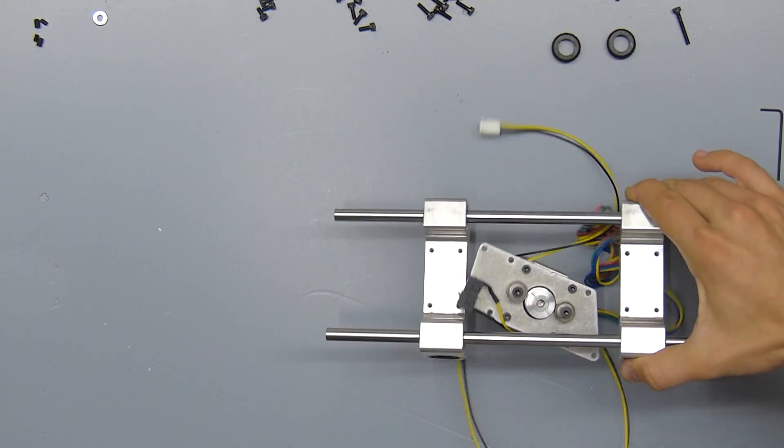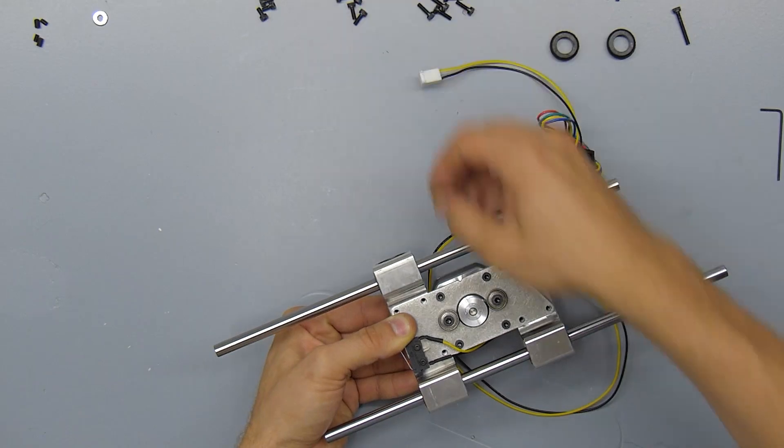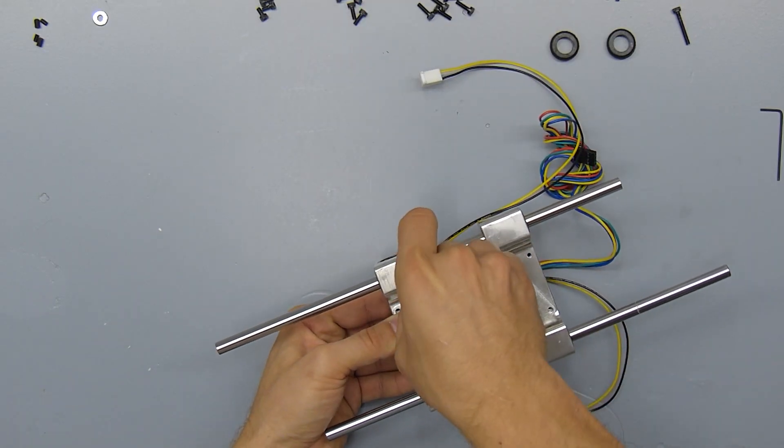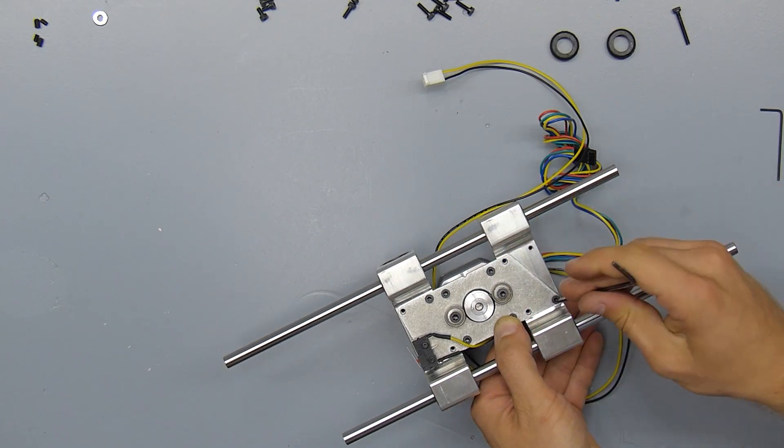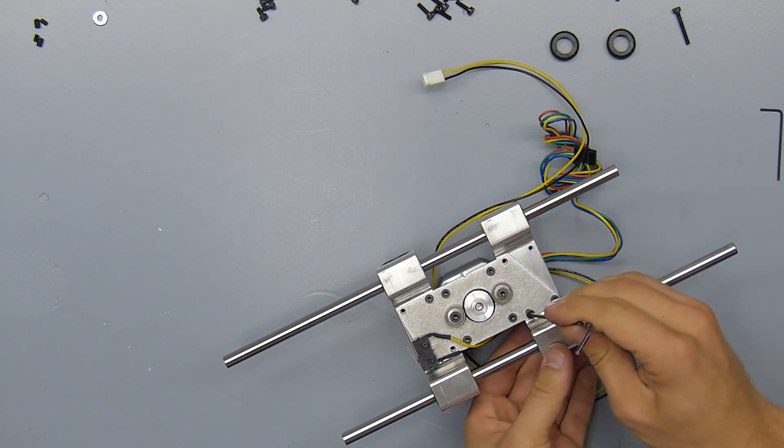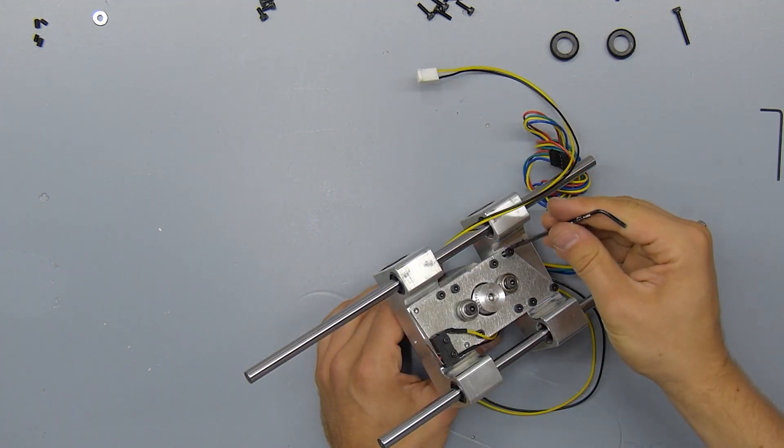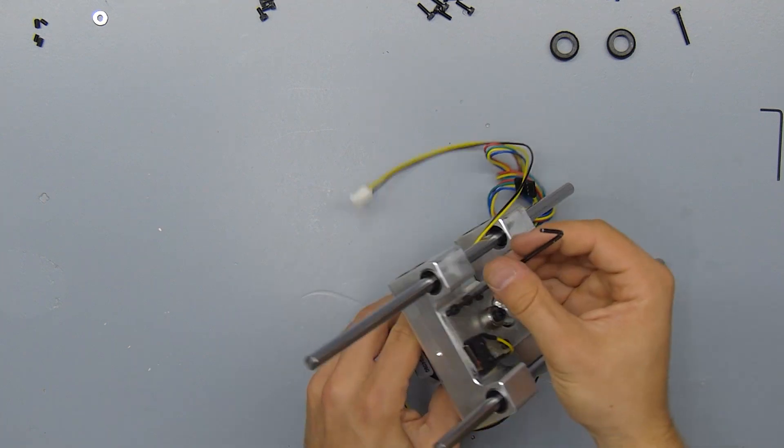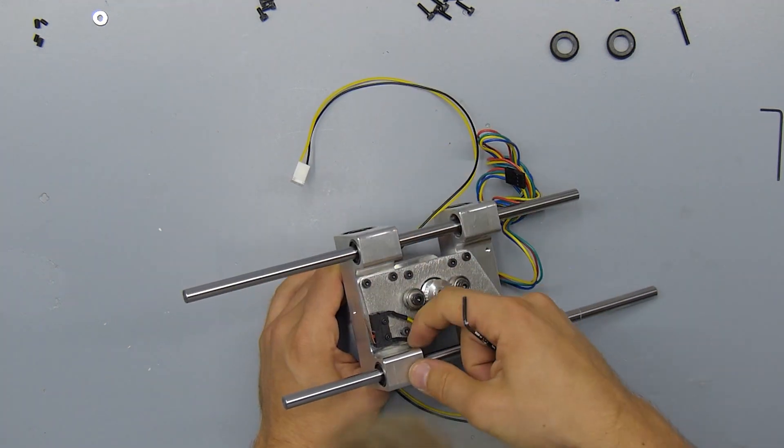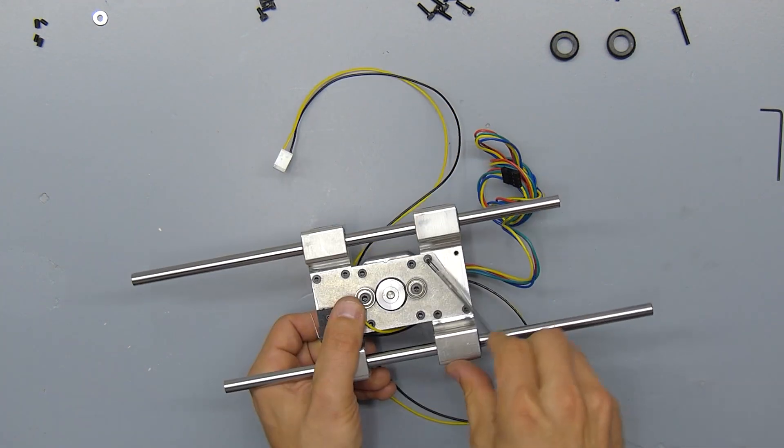And then use 8mm M3 screws to attach the aluminum plate to the bearing blocks. Again, only lightly thread these into the holes at first, and once you're sure that everything is properly aligned you can tighten them all down together. You'll want to check that the rods are still running smoothly after you have tightened everything down.